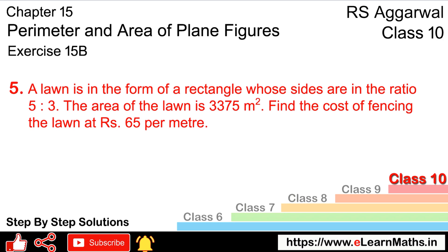Let's do question number 5 of exercise 15B on perimeter and area of plane figures. A lawn is in the form of a rectangle whose sides are in the ratio 5 to 3. The area of the lawn is 3375 square meters. Find the cost of fencing the lawn at Rs. 65 per meter. The cost of fencing is Rs. 65 per meter.